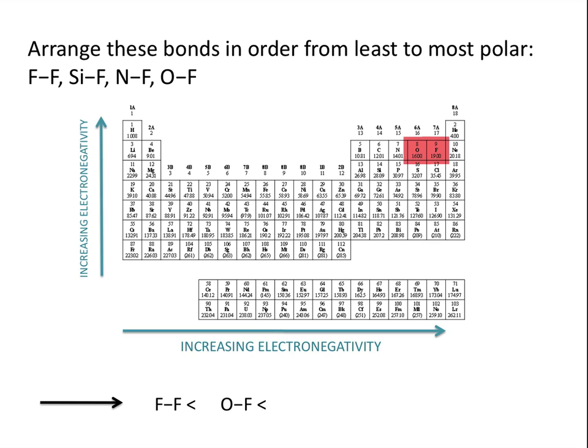Following the general trend that polarity increases as atoms get further apart on the periodic table, the least polar bond after fluorine-fluorine would be the oxygen-fluorine bond. As elements get further apart, the bonds tend to get more and more polar. So the nitrogen-fluorine bond would be the next most polar, and the most polar bond in this problem would be the silicon-fluorine bond, because these two elements are the furthest apart from each other on the periodic table.